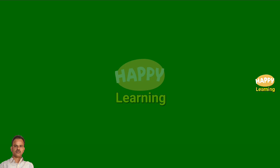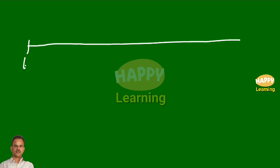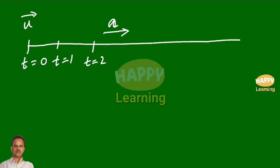Suppose a body is moving along a straight path. When the time t equal to 0, its initial speed is u and it is moving with a uniform acceleration a. After time t equal to 1, it is somewhere here. At time equal to 2 seconds, it is somewhere here. At time t equal to 3, it is somewhere here. At time t equal to n minus 1, it is somewhere here. And at time t equal to n, it is somewhere here, and so on.